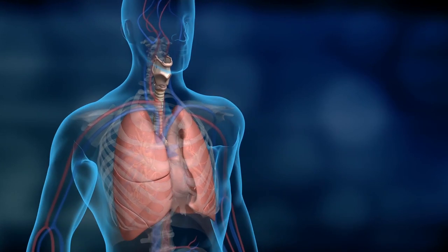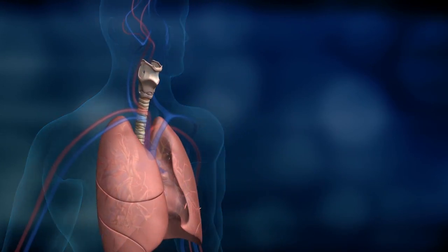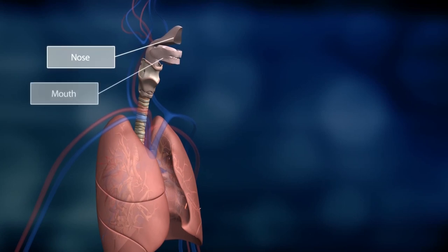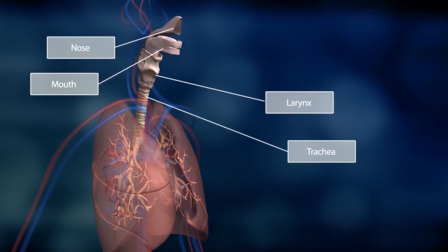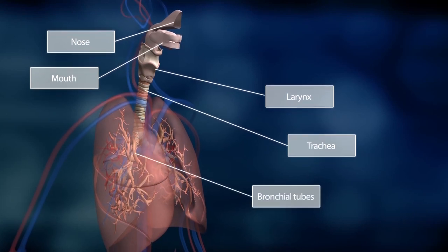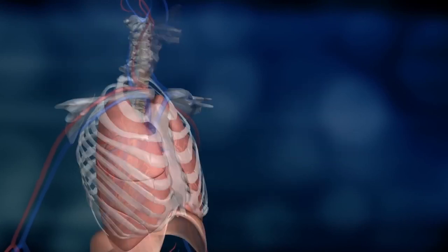Inhaled air follows a long path to the lungs. It flows through the nose and mouth, passes the larynx and trachea, until it finally reaches the bronchial tubes within the lungs. Then it flows all the way back.